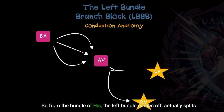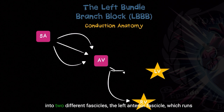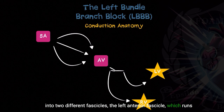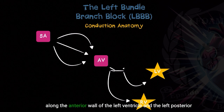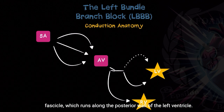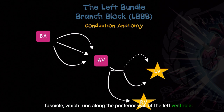So from the bundle of His, the left bundle comes off and actually splits into two different fascicles: the left anterior fascicle, which runs along the anterior wall of the left ventricle, and the left posterior fascicle, which runs along the posterior wall of the left ventricle.